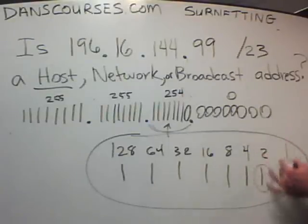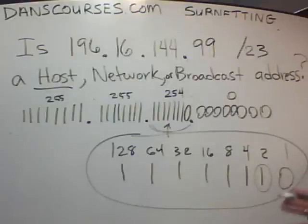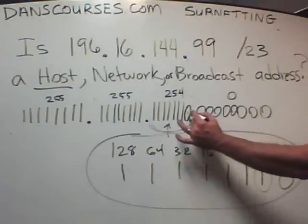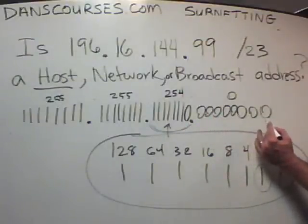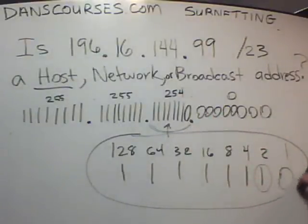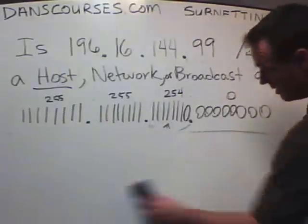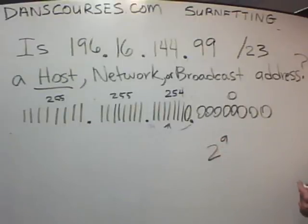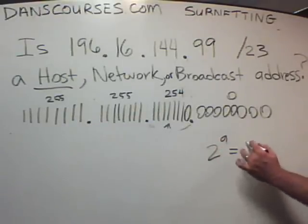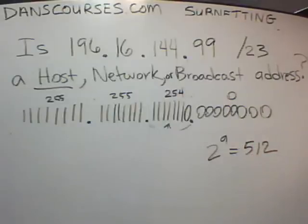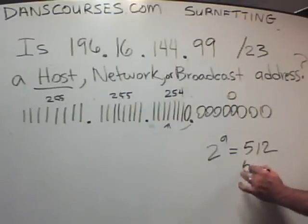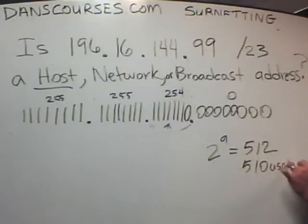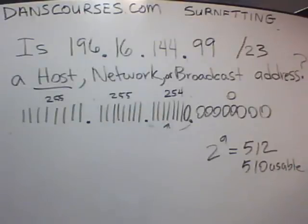But the magic number in this case does not tell us how many hosts we have. How many hosts we have is dictated by the 0s, and we have nine 0s. So in each network there will be 2 to the 9th power of hosts — which is 512 hosts per network. Minus the network number and the broadcast number, that would be 510 usable hosts per network.